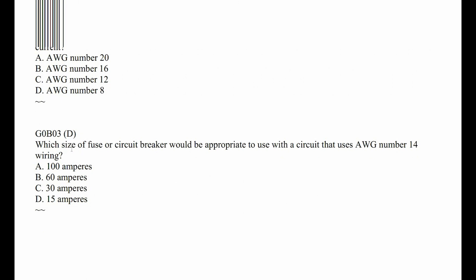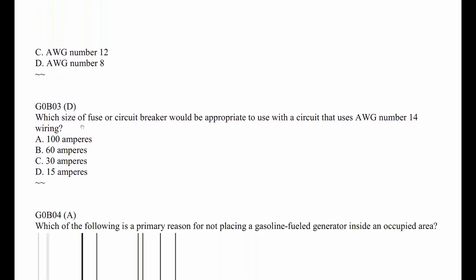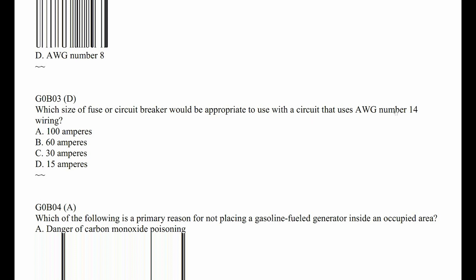G0B03: Which size of fuse or circuit breaker would be appropriate to use with a circuit that uses number 14 wire? There's a word missing here — and that might be volts. Generally speaking for house wiring, number 14 would be 15 amps as discussed in the prior question — so D, 15 amps. But that's a misleading question because if you're fusing a high voltage line, you might have a different answer.